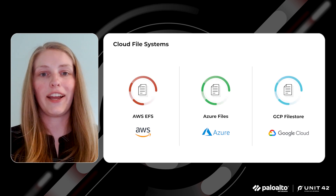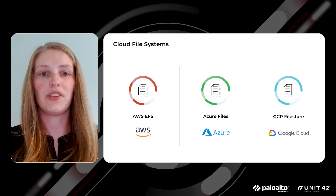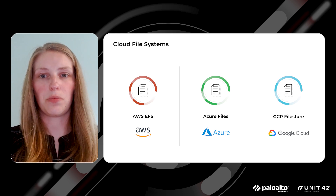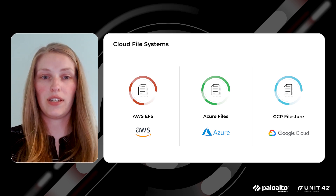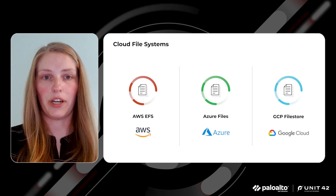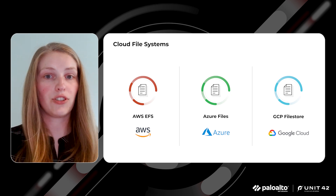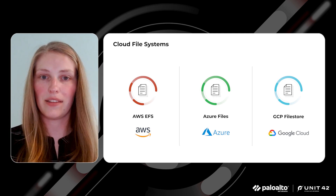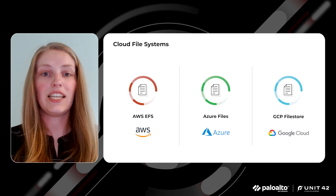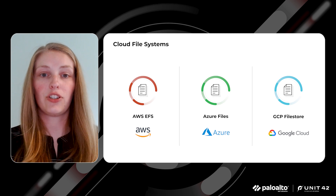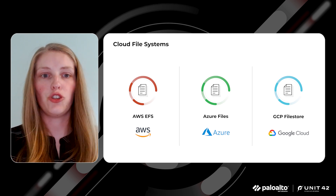Another example of where ransomware might appear in the cloud is in cloud file system services. Similarly to an on-prem shared drive, the various cloud service providers offer file system services which are all susceptible to ransomware. The method of encryption used by ransomware is just as straightforward as the object-level storage. Once a machine connected to a cloud file share system is compromised, the file systems are viewed no differently than a normal shared drive and data is exfiltrated and encrypted. Even though it's a cloud service, the files themselves can be encrypted as any typical file can be in a traditional ransomware attack.